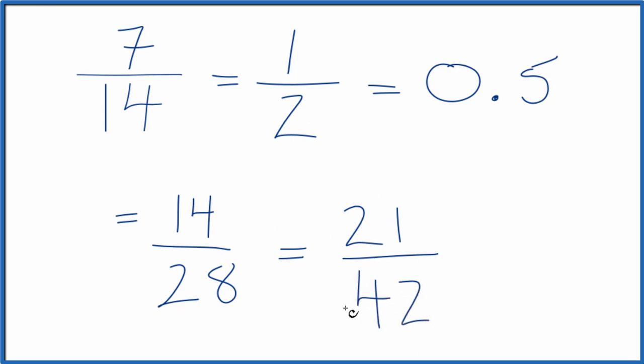This is also an equivalent fraction for 7/14. And if you divide 14 by 28, or 21 by 42, you're going to get 0.5, just like we found before. Because these are all equivalent fractions for 7/14.